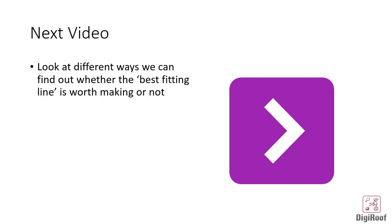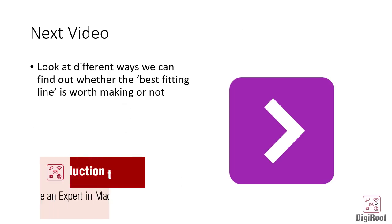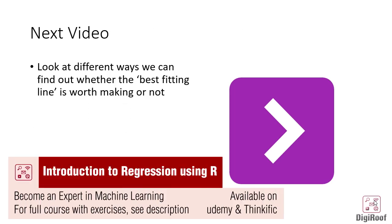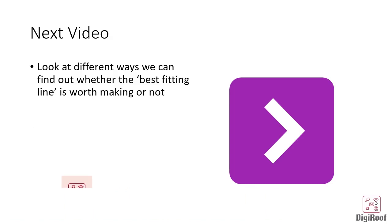In this video, we looked at the different ways through which we can analyze the slope value. Using the slope value, we then calculated the intercept value for this sample data. Finally, we looked at the process of making the regression line in a scatter plot using the slope and intercept value.